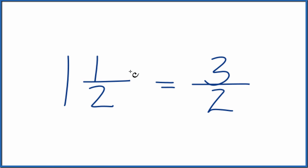The mixed number, or mixed fraction, 1 and 1 half, equals the improper fraction 3 over 2, or 3 halves.